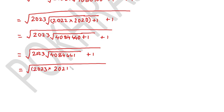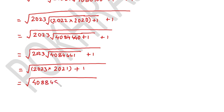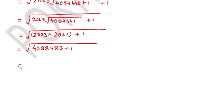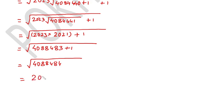Now multiply 2023 × 2021 to get 4,088,483. Adding 1 gives 4,088,484. Adding the remaining plus 1 gives 4,088,484. The square root of 4,088,484 is 2022. So the final answer is 2022.